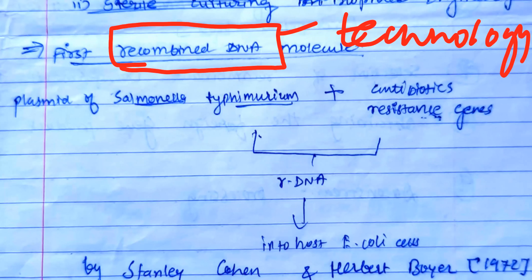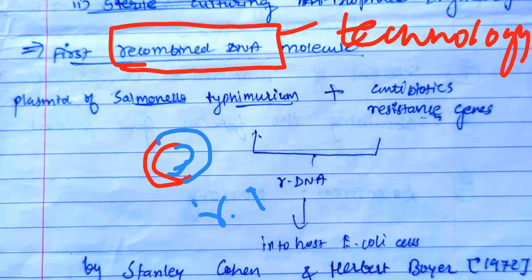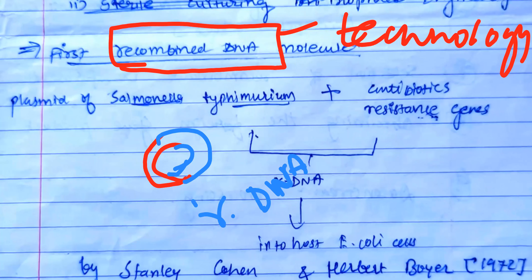Recombinant DNA technology was first employed by Stanley Cohen and Herbert Boyer in 1972. Basically, in this technique we join the DNA of one organism with the DNA of another organism — such combined DNA is called recombinant DNA. The technology by which we prepare and utilize this DNA is called recombinant DNA technology.